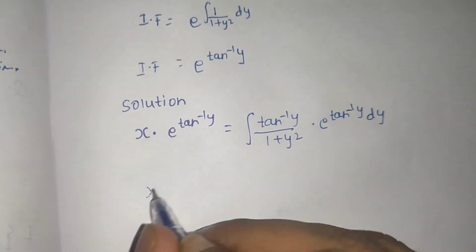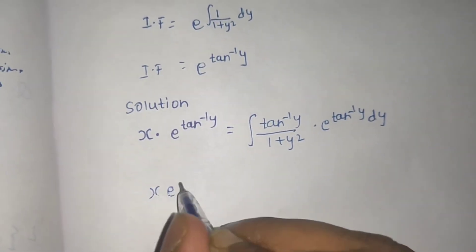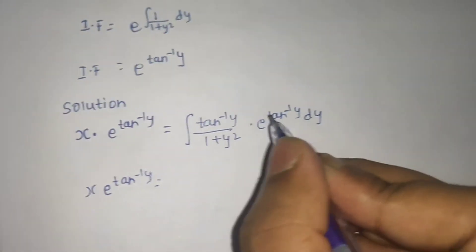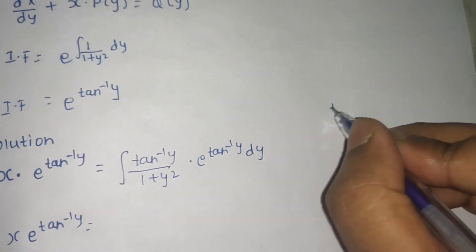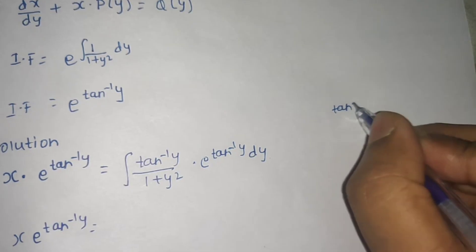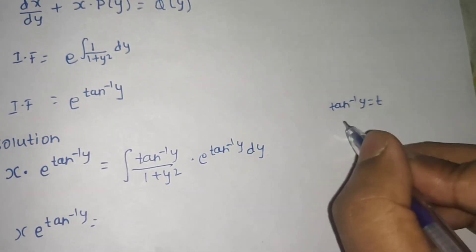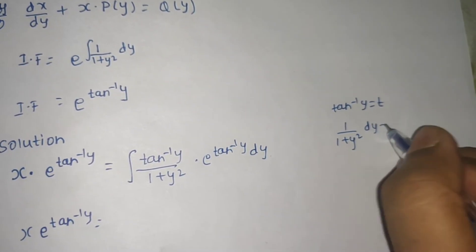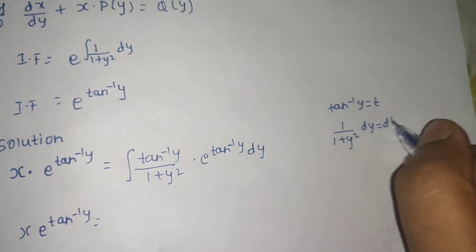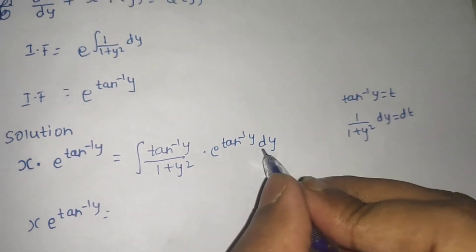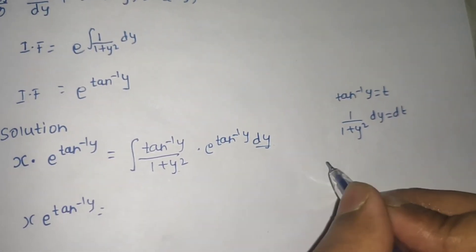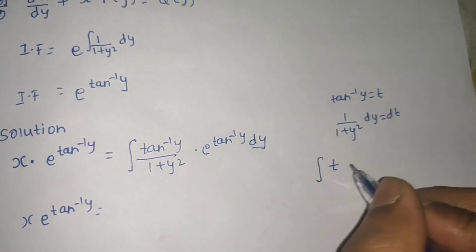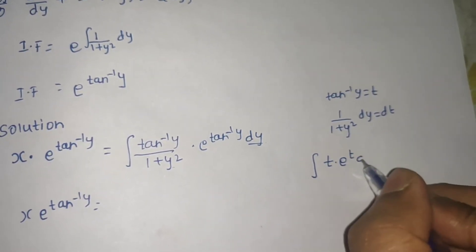So x·e^(tan⁻¹y) equals the integral of tan⁻¹y/(1 + y²)·e^(tan⁻¹y) dy. To solve this integral, let t = tan⁻¹y, so 1/(1 + y²) dy becomes dt. The integral becomes ∫t·eᵗ dt.